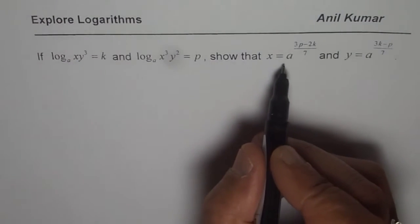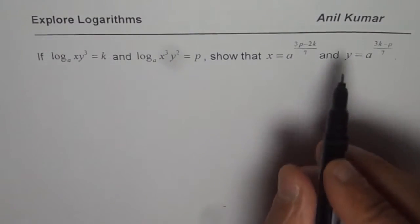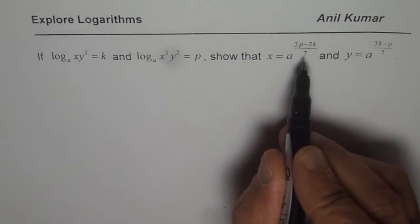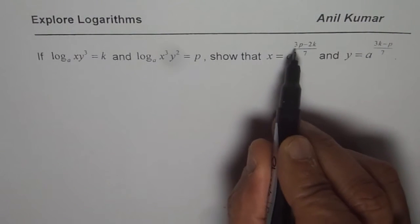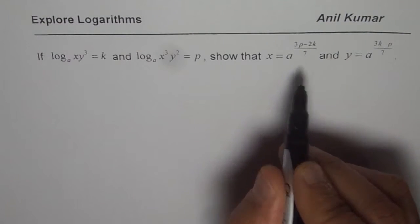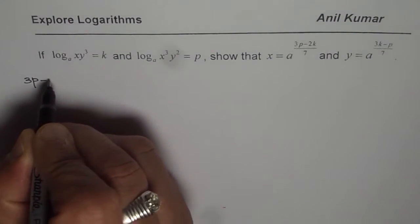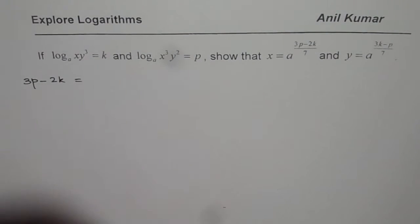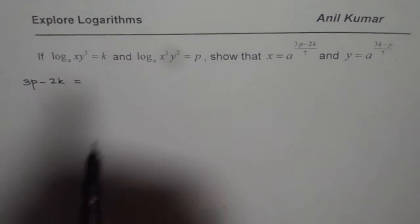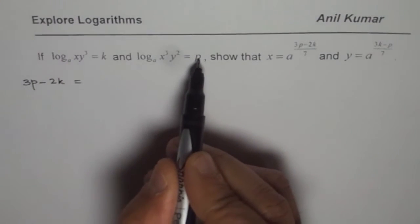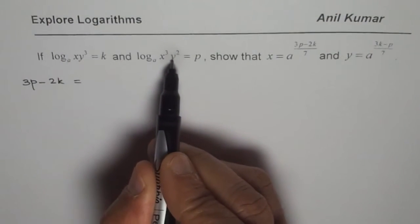We need to show that x equals a to the power of something, y equals a to the power of something. We will begin with what we really want to prove: (3p - 2k)/7. Let us figure out what is 3p - 2k equals to. We are given that k is log_A of xy³, p is log_A of x³y².